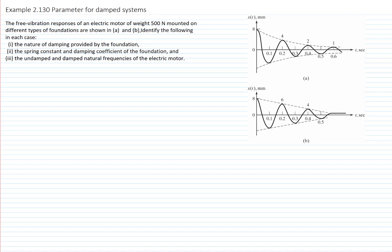First let's see what we are given. We are given those two curves and the weight. With the weight we can calculate the mass. The mass is the weight over gravity. The weight is 500 N and gravity is 9.81, so the mass is 50.97 kg.